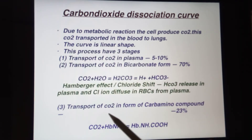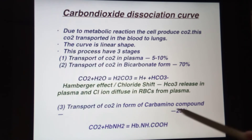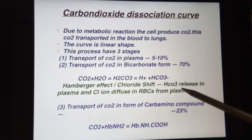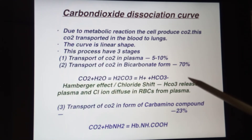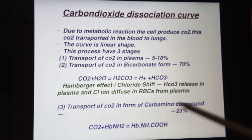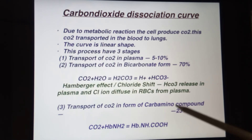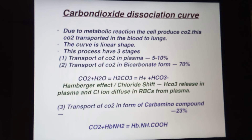The third form is transportation of CO2 as a carbamino compound. Approximately 23 percent of CO2 travels in this form. In the RBC, carbon dioxide attaches to the amino group of the hemoglobin's globin chain, forming carbamino hemoglobin — written as Hb-NH-COOH. Oxygen is also released from the hemoglobin in this process.